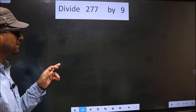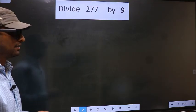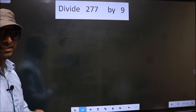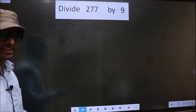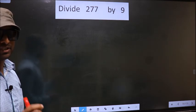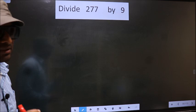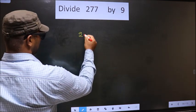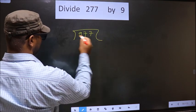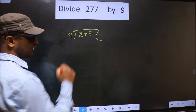Divide 277 by 9. While doing this division, many do this mistake. What is the mistake that they do? I will let you know. But before that, we should frame it in this way. That is 277, 9 here.